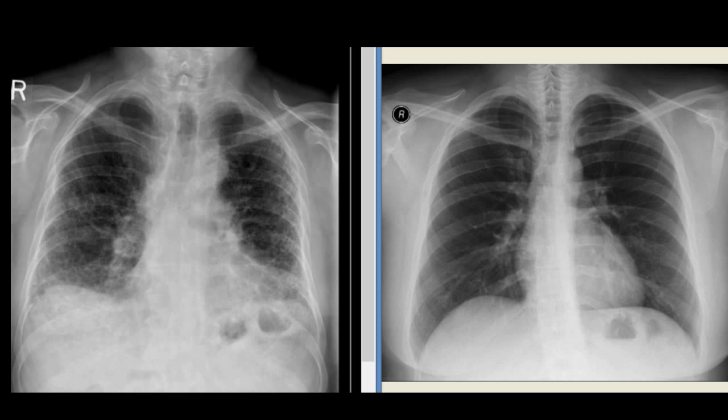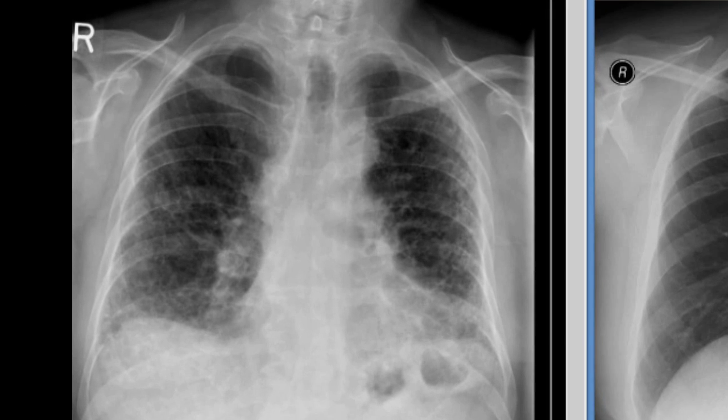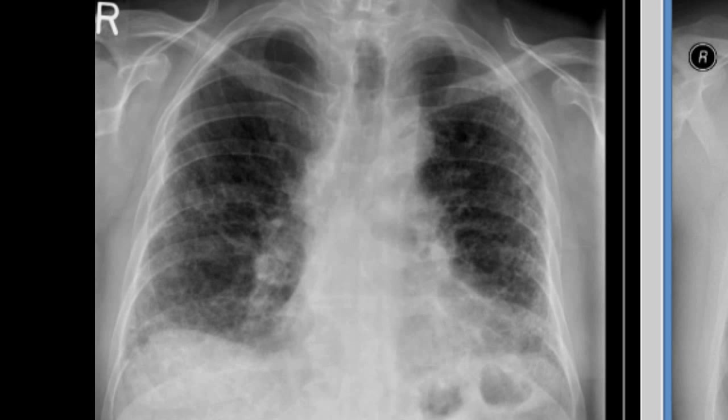If you look at the left main bronchus, you would agree that there is no gradual tapering as would be the case with a normal bronchus. The appearance is suggestive of traction bronchiectasis. Both right and left pulmonary arteries have lost their definition. Looking at the mediastinum, you can see that it is not only widened but there is also architectural distortion. Looking at the lung parenchyma, there are multiple cysts scattered throughout both lungs, commonly known as honeycombing.